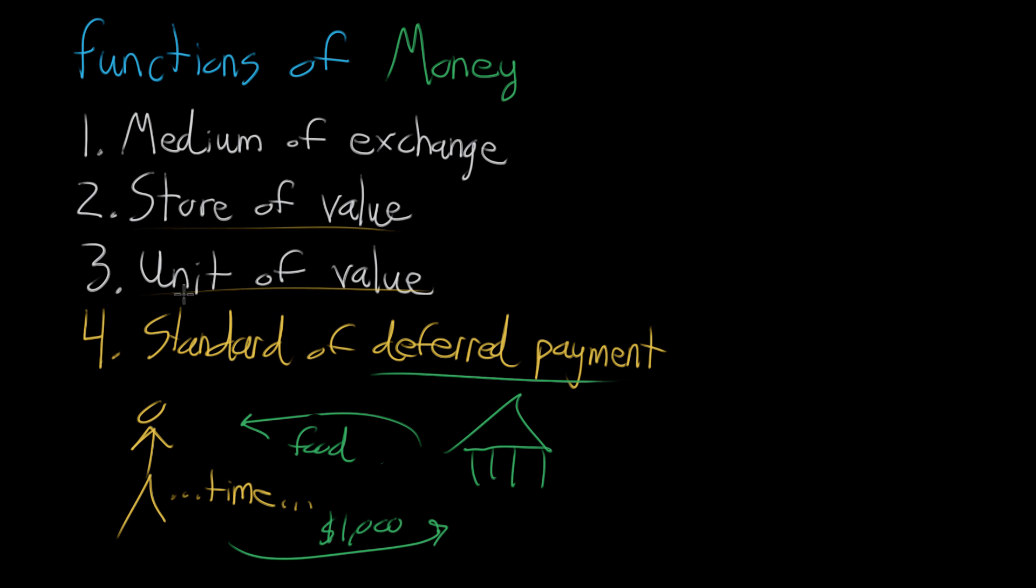And now you might be able to see why some people think that this shouldn't count as an extra one. Because you could argue that this falls under the category of a medium of exchange. Just in the same way that you use money to buy a chair or to buy legal services or to buy food, you're using money to pay your debt. It's just another one of those things that you're exchanging for. So why should this be separated?